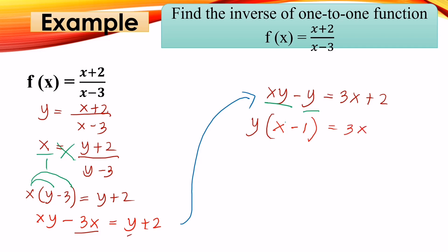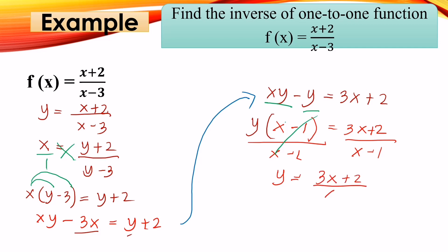Factor out y: y(x - 1) = 3x + 2. Then divide both sides by (x - 1) to isolate y: y = (3x + 2)/(x - 1). Change y into inverse function notation: f⁻¹(x) = (3x + 2)/(x - 1). This is the inverse function of f(x) = (x + 2)/(x - 3).